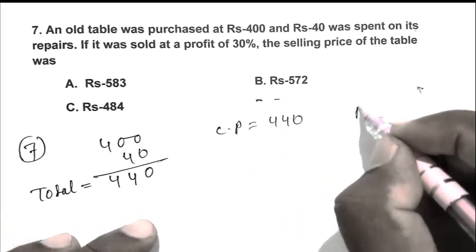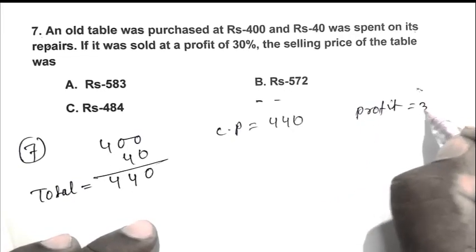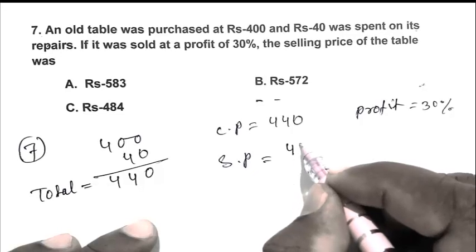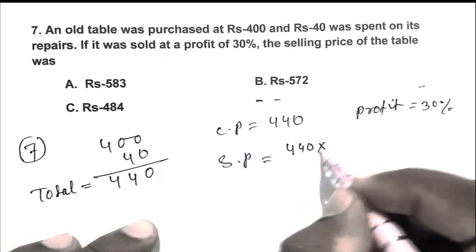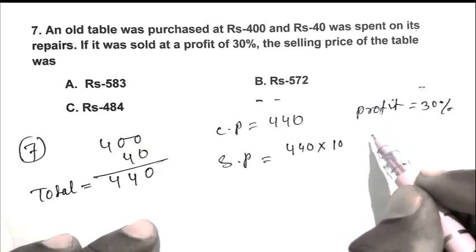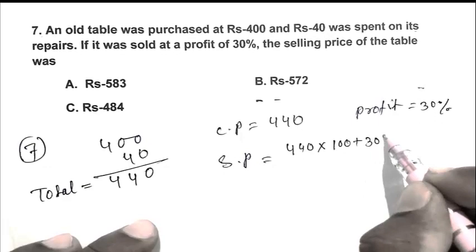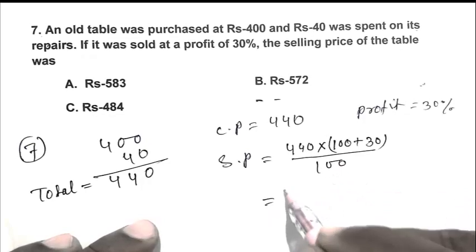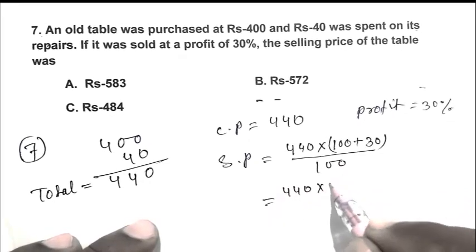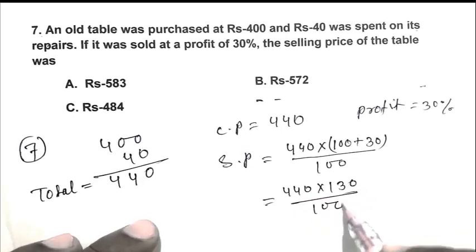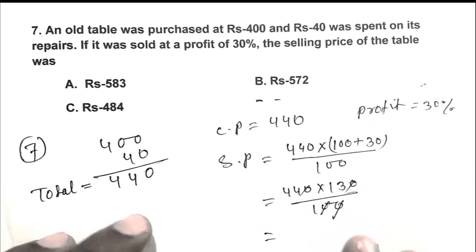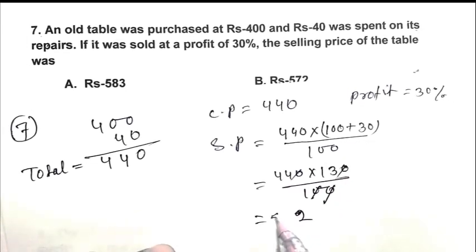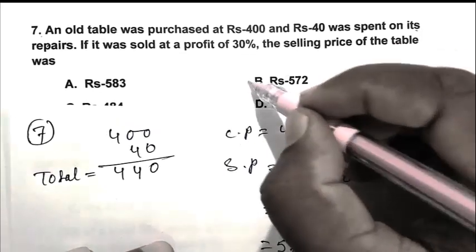Profit percentage 30%. Therefore, selling price CP multiplied by 100 plus profit percentage upon 100, that is 440 multiplied by 130 upon 100. So 572. So B is the right answer.